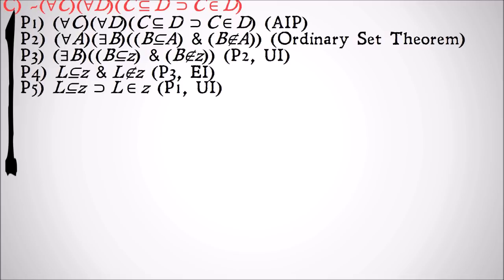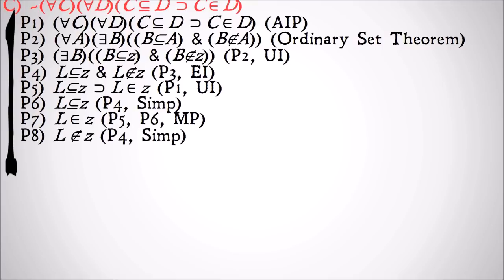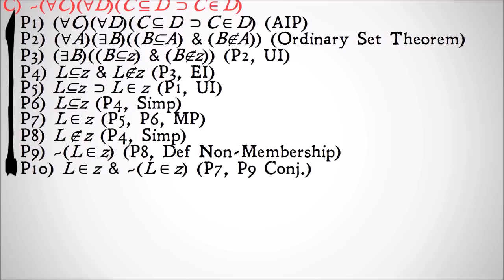We'll universally instantiate A to Z and B to L like we did before. We're going to take our original premise and use universal instantiation twice to get L and Z again because both those are universal on C and D. We'll simplify premise four down, use modus ponens on five and six to get L as a member of Z. Then we'll simplify four down to get L as not a member of Z, use definition of non-membership to make that really explicit, and then conjoin those two and end up with a contradiction.